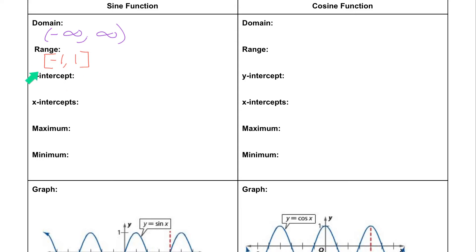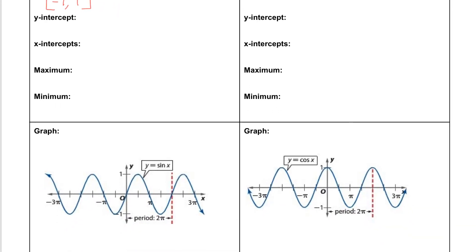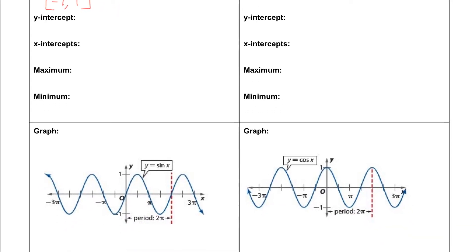Next we want to know about the y-intercepts. Looking at the graph, we're looking for where it crosses the y-axis. It's crossing the y-axis at the point (0, 0), so our y-intercept is the point (0, 0).